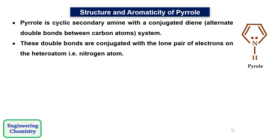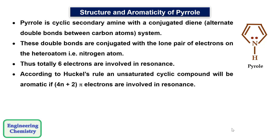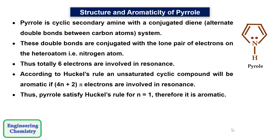Thus we can say that a total of six electrons are involved in resonance. According to Hückel's rule, an unsaturated cyclic compound will be aromatic if there are 4N+2 pi electrons involved in resonance. Here, there are 4 pi electrons and 2 non-bonding electrons, giving a total of 6 electrons. These 6 pi electrons are in a single plane and are conjugated — they together revolve around the whole structure.